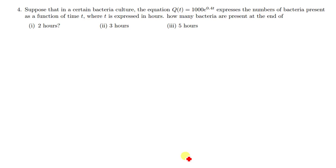Hi everyone, welcome to today's tutorial. Let's look at question four. Suppose that in a certain bacterial culture, the equation Q(t) = 1000e^(0.4t) expresses the number of bacteria present as a function of time t.